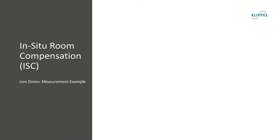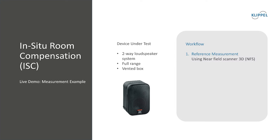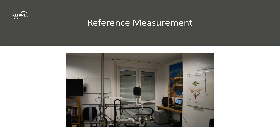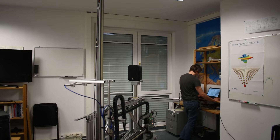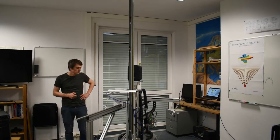Now it's time for some practical measurements. Our test object is a passive two-way loudspeaker system that has a vented box design. I will guide you through the complete workflow, starting with a reference measurement, then calibrating a test setup and calculating the compensation filter, and finally performing standard measurements. Step 1: the reference measurement. There is a near-field scanner in our office, so this would be the choice for the reference measurement.